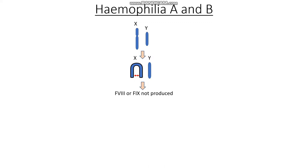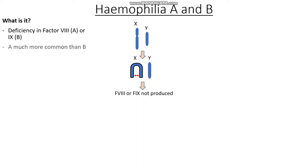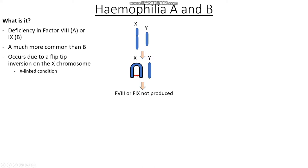Hemophilia is therefore a deficiency of either Factor 8 in hemophilia A, or Factor 9 in hemophilia B. Factor 8 deficiency is significantly more common. This occurs due to what we call a flip-tip inversion, where the X chromosome crosses around itself, leading to this X-linked recessive condition.